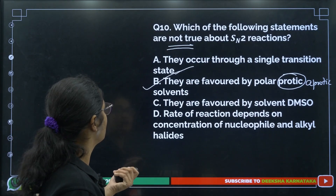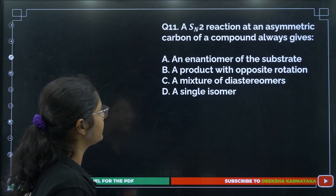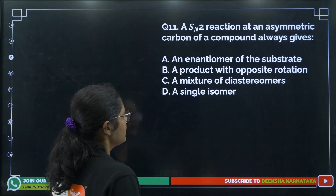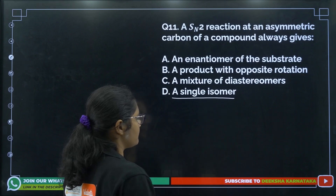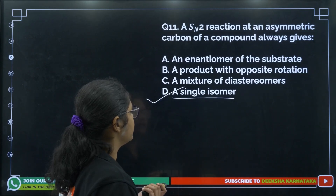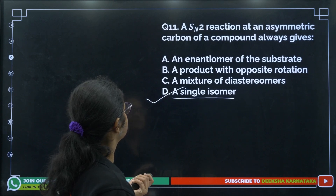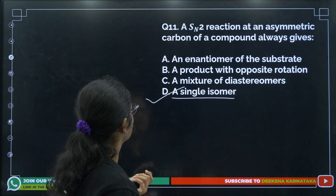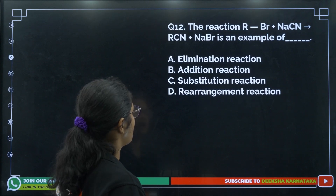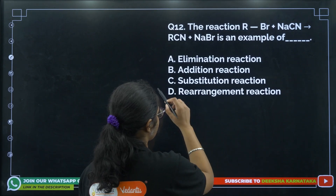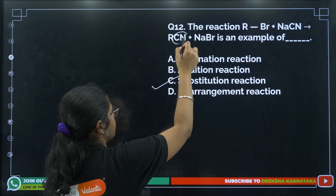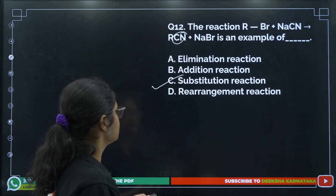Question 11: SN2 reaction at an asymmetric carbon always gives a single isomer as the product — that is option number D. Question 12: The reaction RBr + NaCN gives RCN + NaBr. This is an example of a substitution reaction, where Br is replaced or substituted with a CN group.